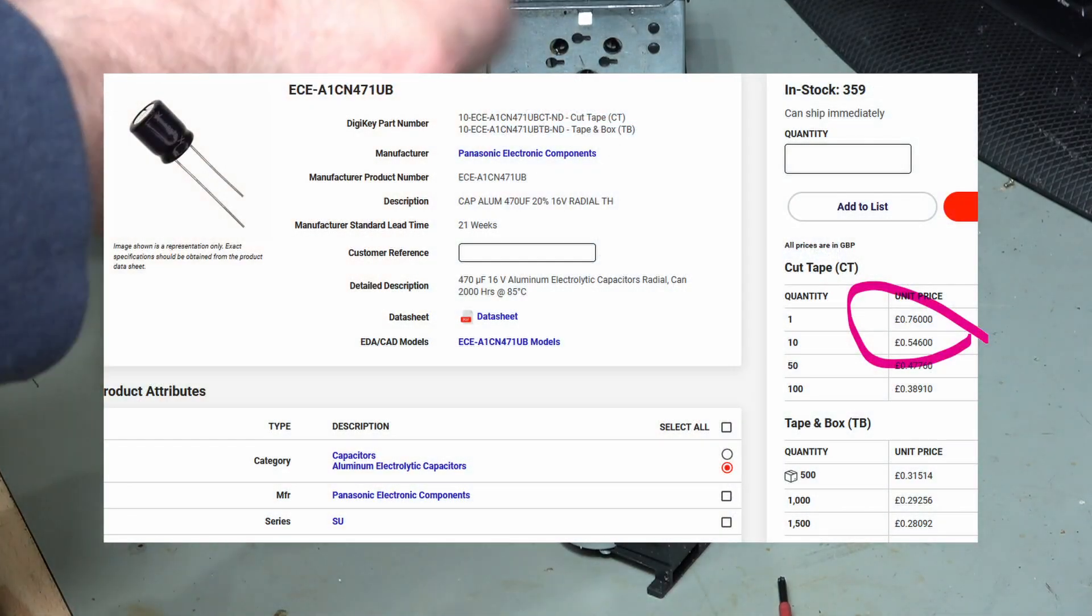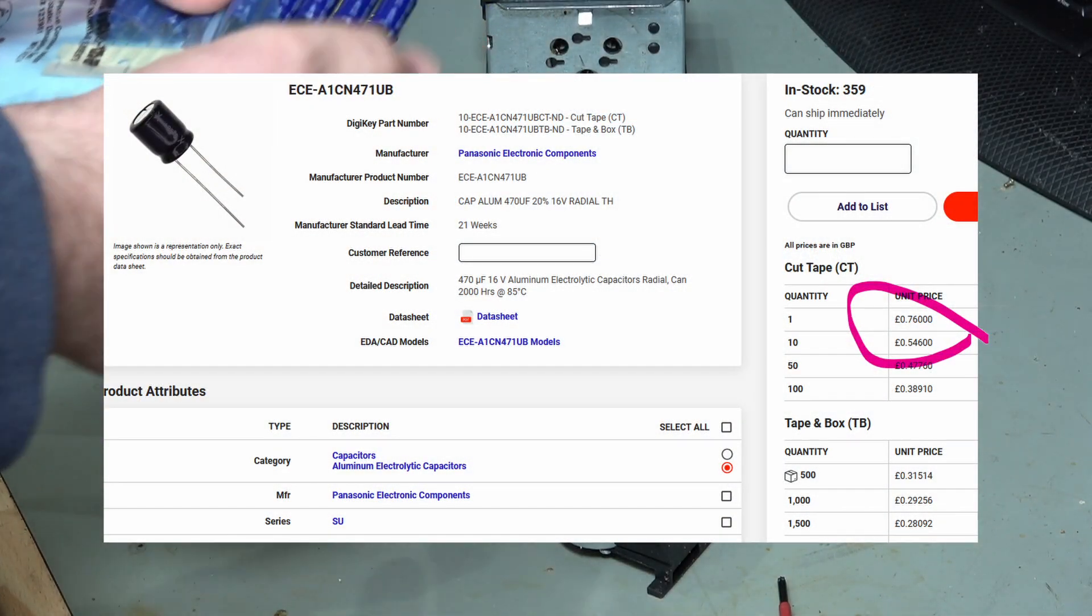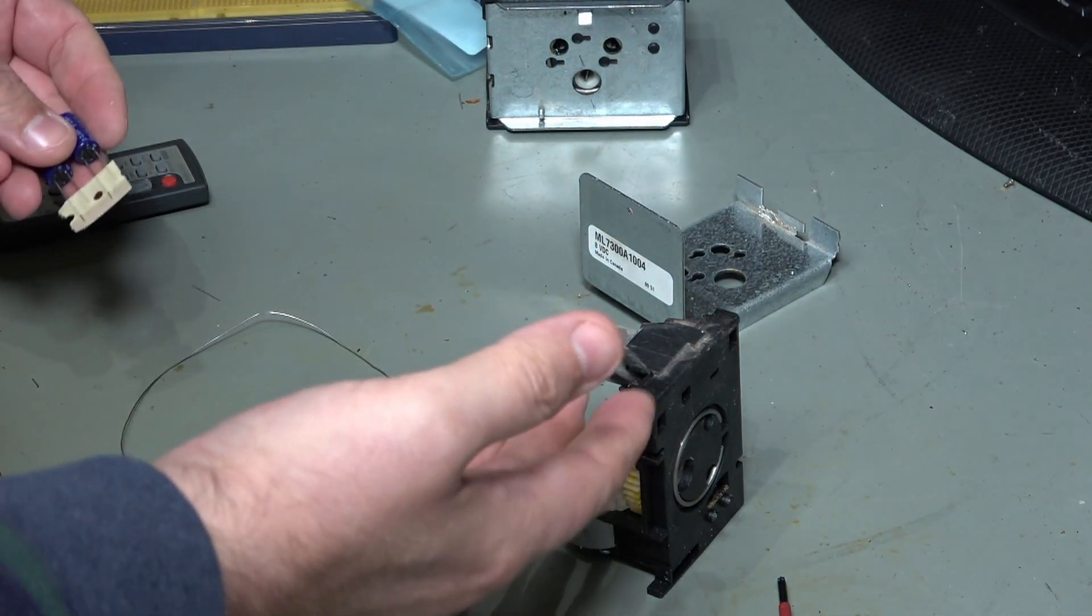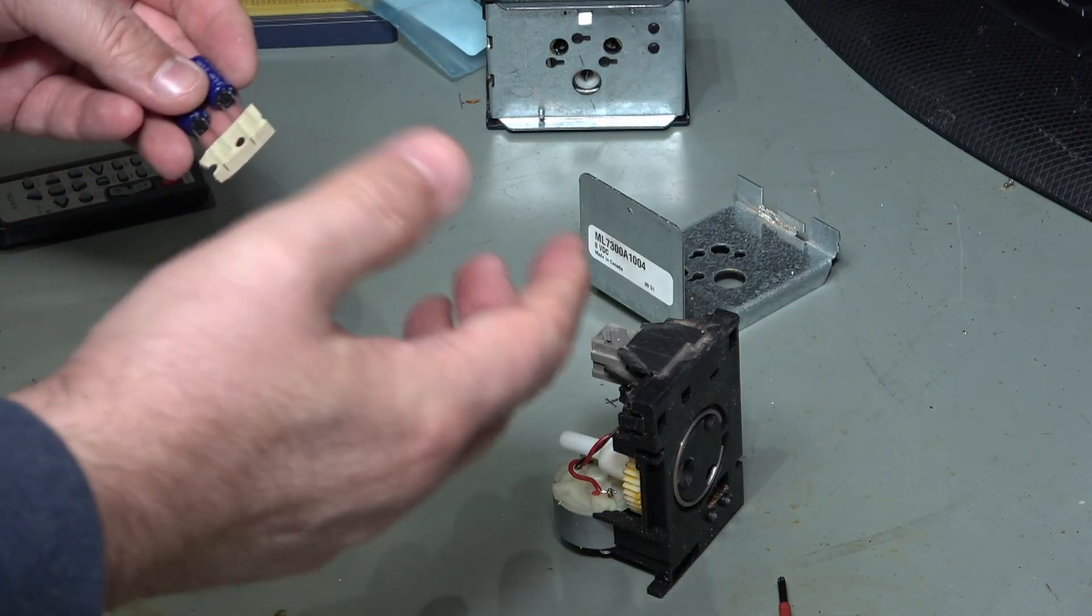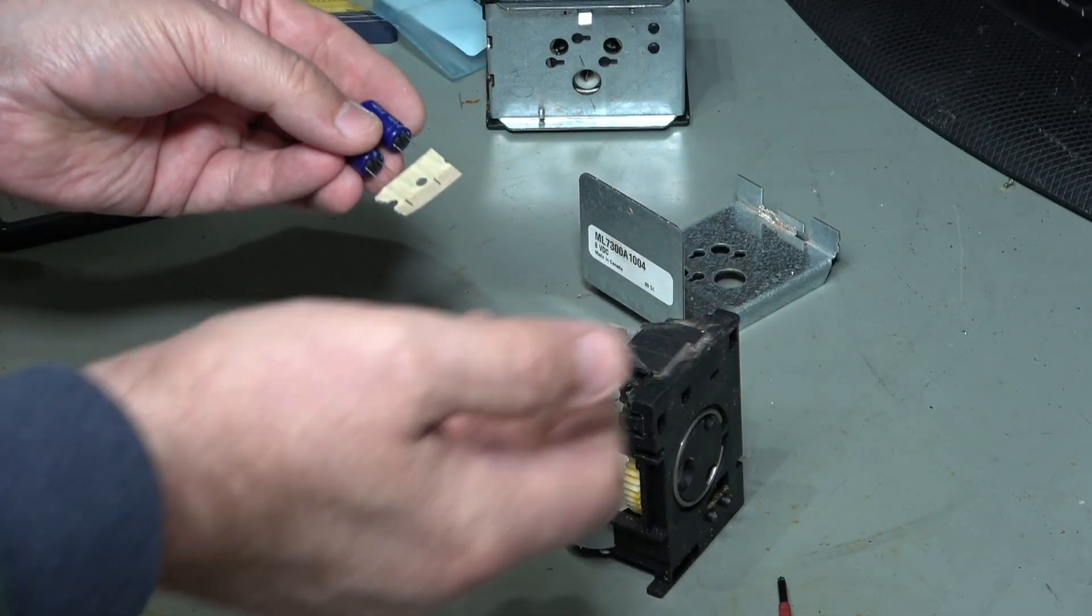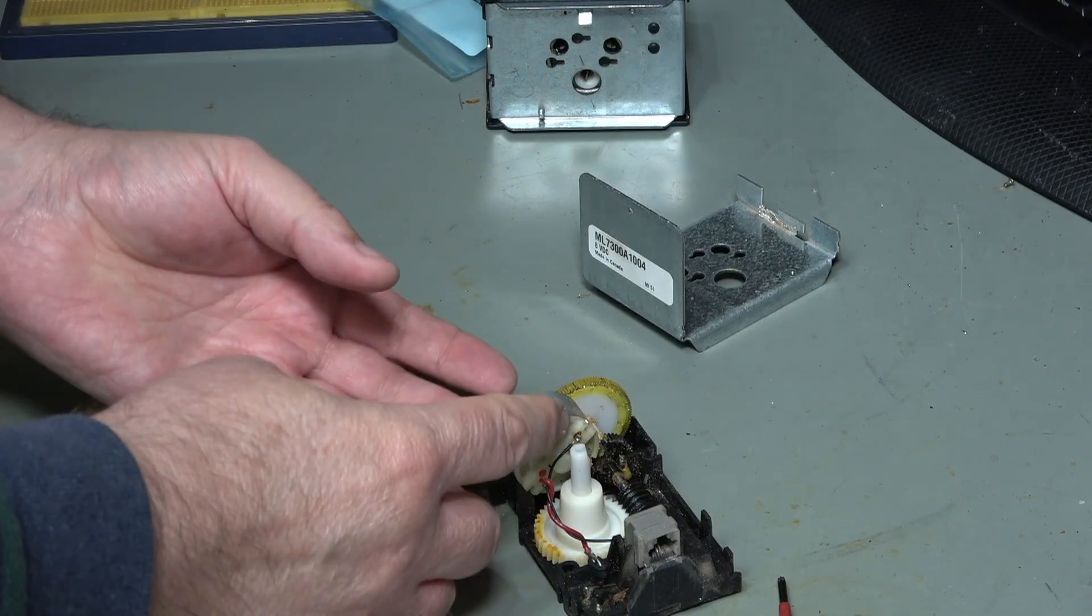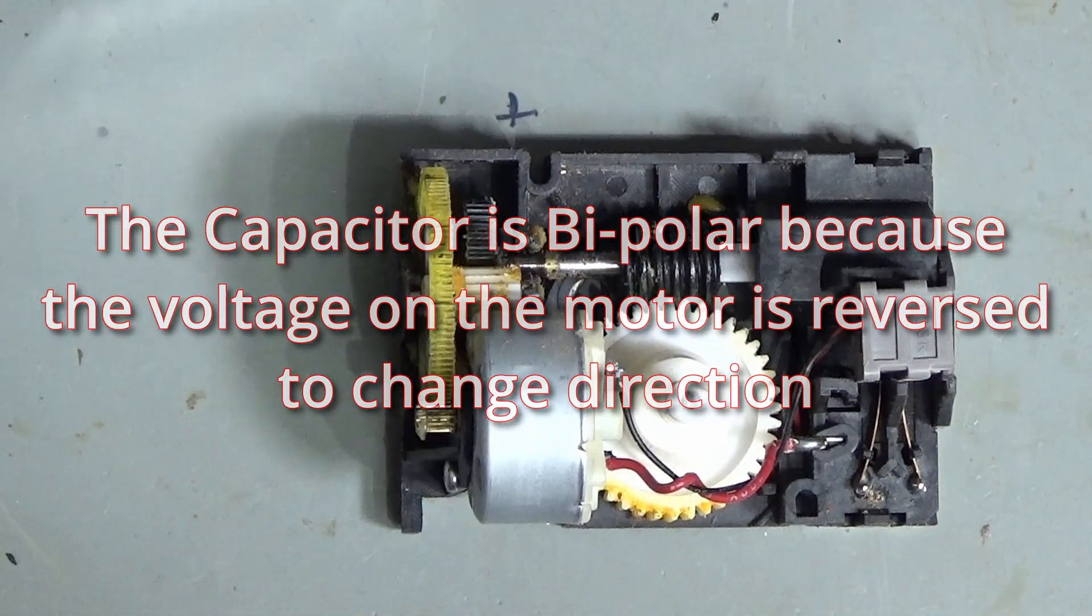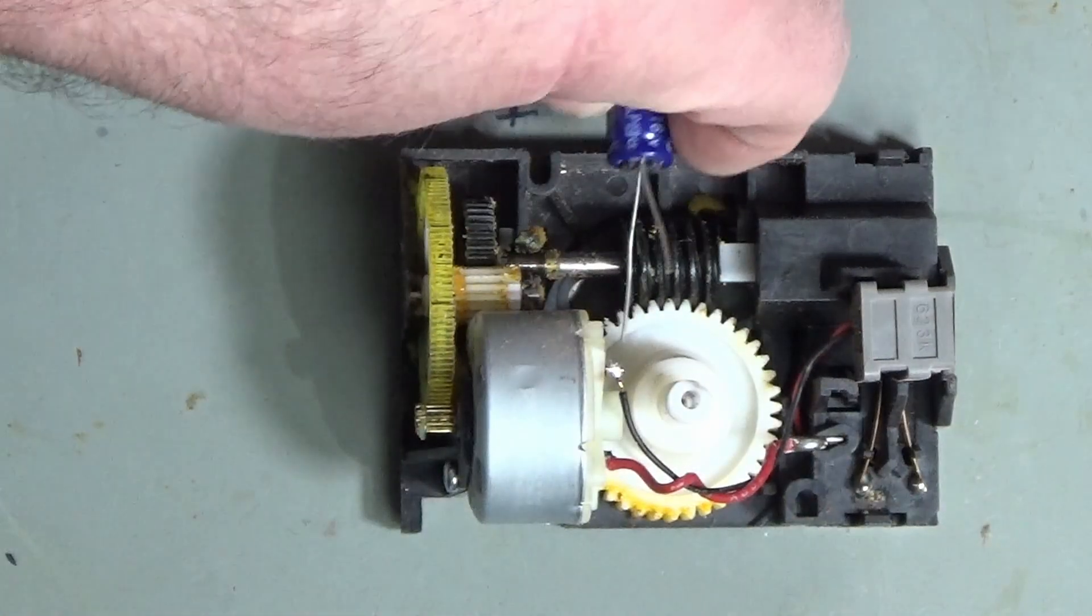I've got some new ones. These are 470 microfarad, 16 volts. So you can always put a higher voltage in. You don't want to go ridiculously high though. You know, this is 16 volts versus 8 volts. That's absolutely fine. The motor in here is an 8 volt DC motor. So here's our new capacitor. Let's get that fitted. And then we should be up and running absolutely fine.